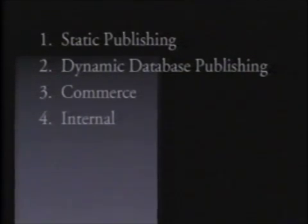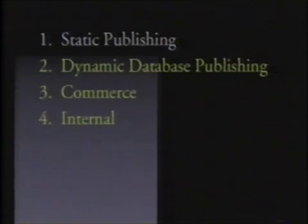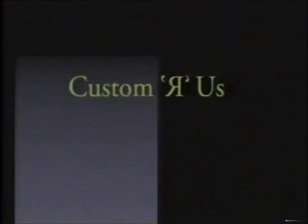So these are the four things we think people are going to be doing with the web in the next few years: static publishing, dynamic database publishing, commerce, and internal custom apps. What's interesting about this is that three of the four require custom applications. Static publishing does not, but dynamic database publishing does — that Federal Express app took four months to write, the others took longer. Commerce requires major work to tie the web into your order management system. And internal custom apps by definition. Well, that's what we've been doing for ten years. So how can we bring value to this? And this turned out beautifully. How do we help people take input from the web, process it, go to databases, get data, bring it back, process it...